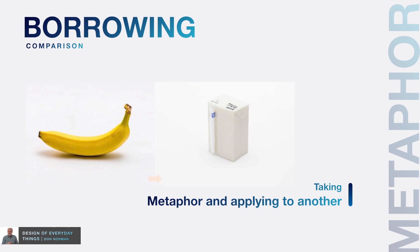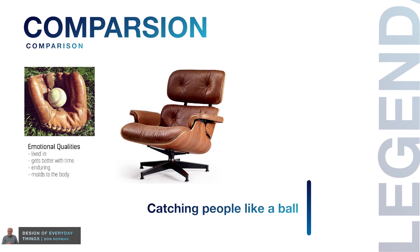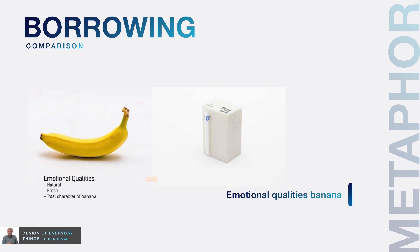This is also metaphor. Can you see this? This is a banana juice pack — a small tetra pack for banana juice. How do you communicate this as a banana juice? Can you use metaphorical principles and take emotional qualities, just like we took for the chair design? This chair is designed by Charles and Ray Eames — a very famous chair design — and it is inspired largely from the baseball glove. It catches people like a ball, gets better with emotion over time, molds to the body, enduring, lived in for years.